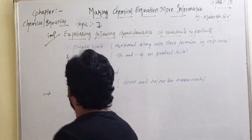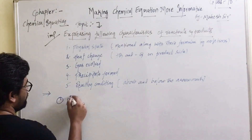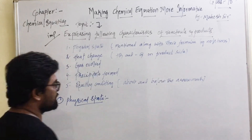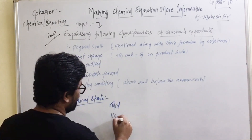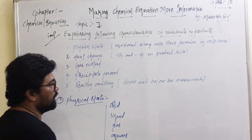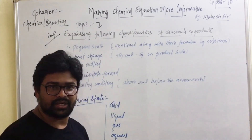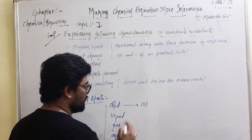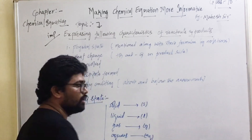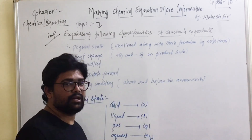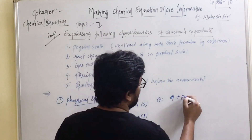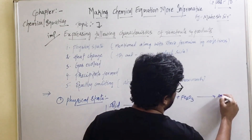First, how do we express physical states in a chemical reaction? The physical states such as solid, liquid, gas, and aqueous have to be mentioned along with the formula by a notation. If it is a solid, we express it with the notation (s) along with the formula; liquid as (l); gas as (g); and aqueous as (aq).